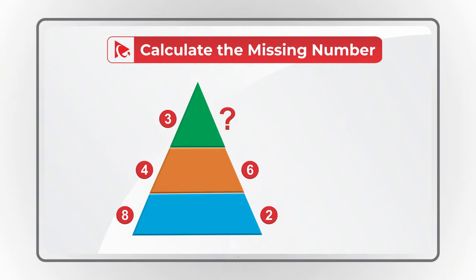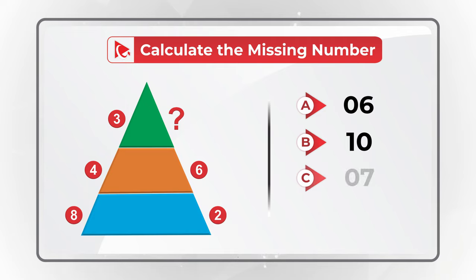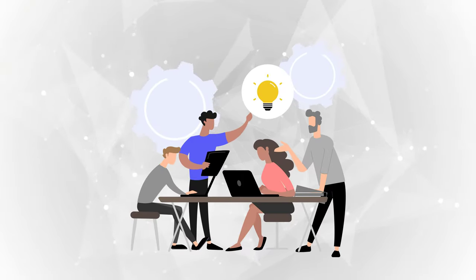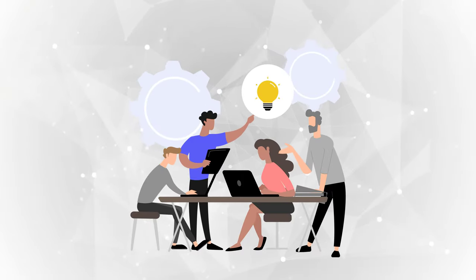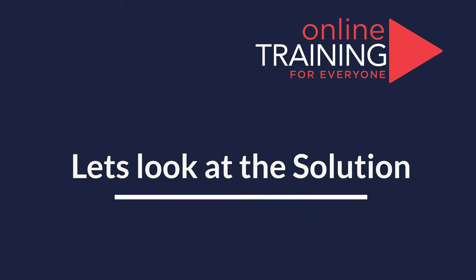You are presented with four different choices: Choice A, 6; Choice B, 10; Choice C, 7; and Choice D, 2. Do you see the answer? I am going to give you a quick hint here — you need not to guess the number, but you need to calculate it. Let's move forward so we can get to the correct solution together.